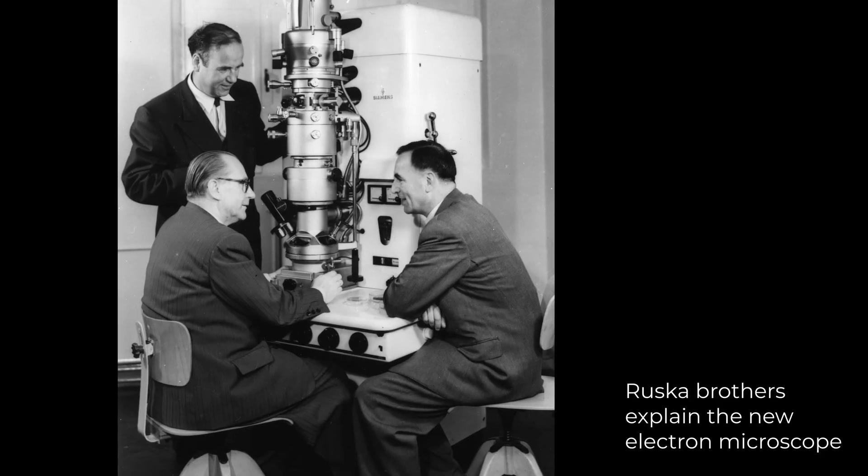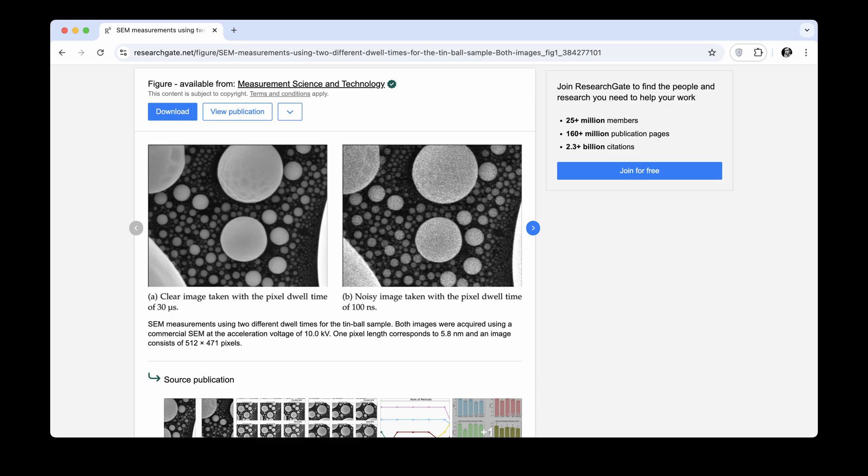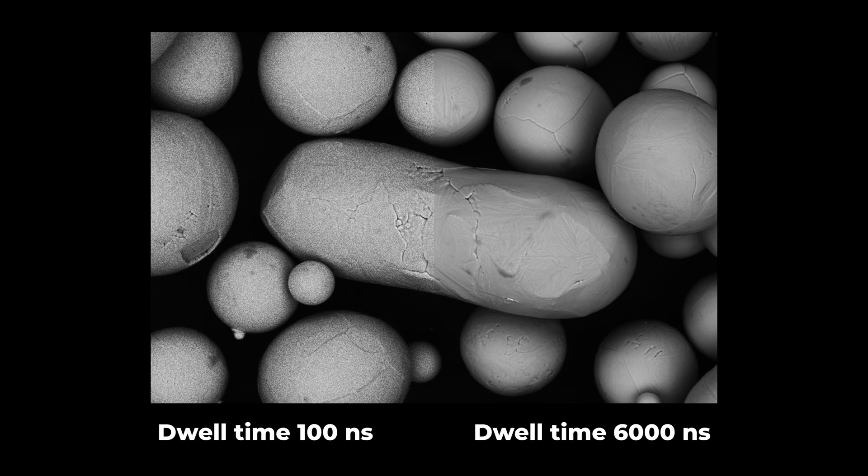Experienced users may object to me because they use higher dwell time settings for collecting the signal on low kVs. The scanning speed decreases and we can collect more signal in every point. But in this tabletop microscope I have no way to adjust the dwell time without hacking the software mode.